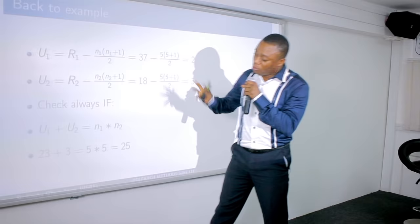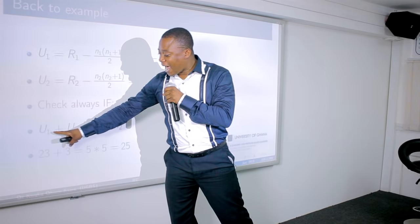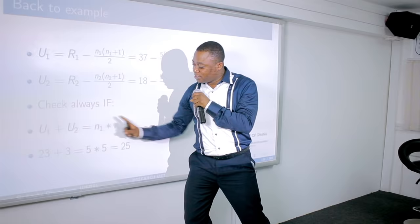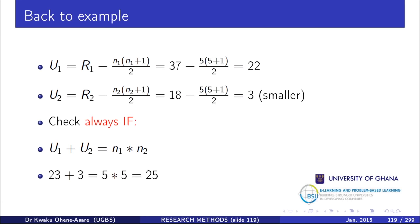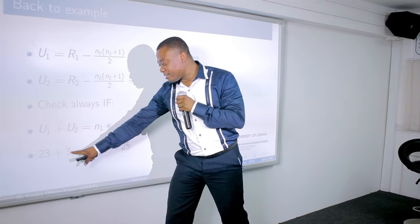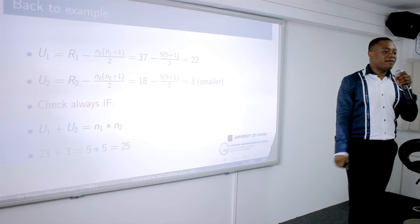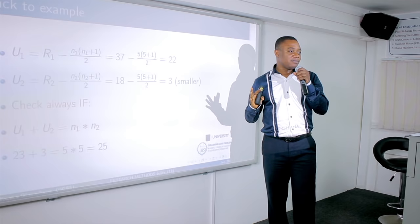Commandment Number Two: add the two calculated U values together — they should equal n1 × n2. Here, 22 + 3 = 25, and 5 × 5 = 25. This confirms the calculations are correct. The moment Commandment Two holds, you are good to proceed with the conclusion.